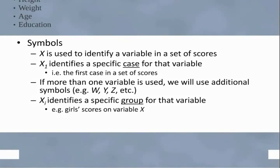If we have more than one variable, in a multivariate case, we'll use additional symbols, and it usually starts at X and goes up to Z. So X, W, Y, Z, so on and so forth. And then when we use sub letters, in this last case, X sub i identifies a specific group. So again, for example, if we're talking about girls' scores on variable X, if we're talking about girls' height on variable X.